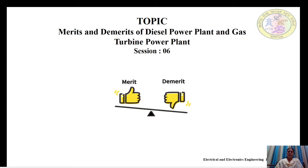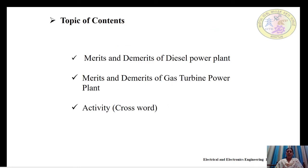Today's topic is merits and demerits of diesel and gas turbine power plant. This is session 6 and the last session in Unit 2. In today's class, we are going to study the merits and demerits of both diesel power plant and gas turbine power plant. The contents include an activity — a crossword — which we will solve together.